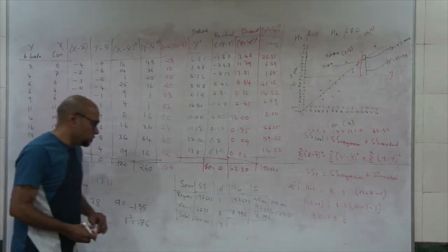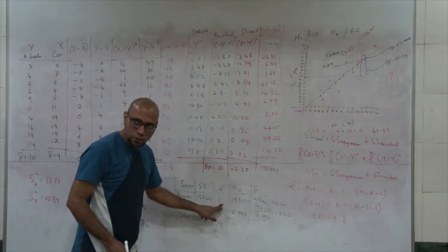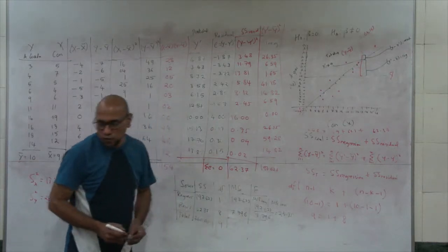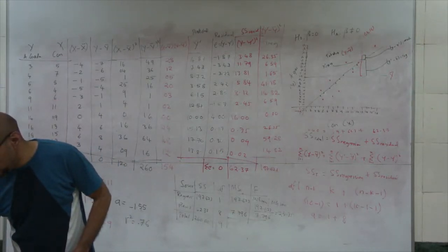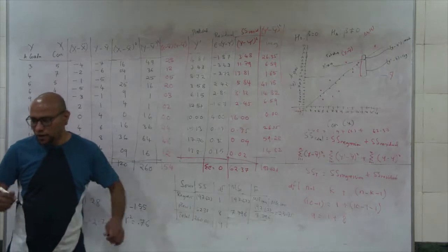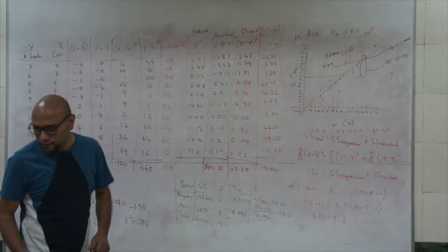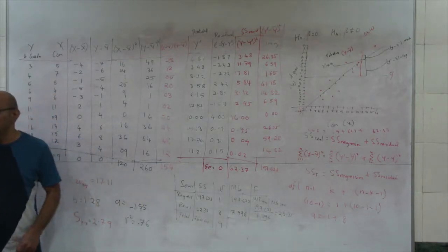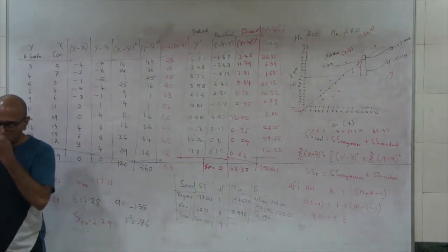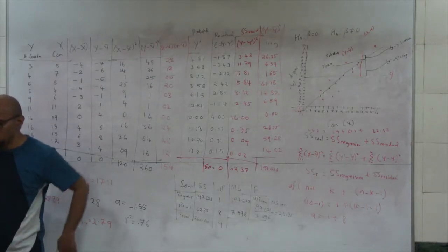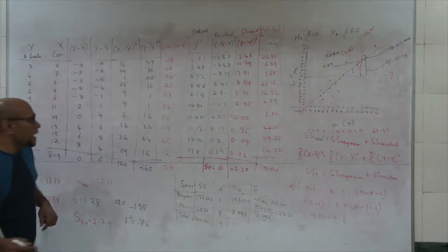We compute F as MSR divided by MSE residual, which is 197.623 divided by 7.796, equal to 25.35. This F has numerator degrees of freedom of 1 and denominator degrees of freedom of 8. From the table or from R using the code qF(0.95, 1, 8), I can get the critical F value.